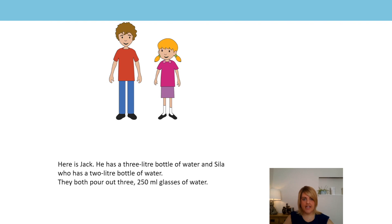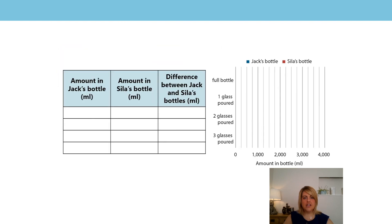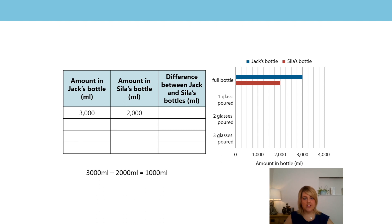Now let's have a look at another context. Here is Jack — he has a three litre bottle of water — and Scylla has a two litre bottle of water. They both pour out three 250 millilitre glasses of water. What is the difference between the amounts in their bottles after each glass is poured? To start with, I need to think about how many millilitres is in one litre — yes, that's right, 1000 millilitres. So how many millilitres is in Jack's bottle at the start? 3000 millilitres. And how many are in Scylla's bottle? That's right, 2000 millilitres. What's the difference in their full bottles? Yes, 1000 millilitres.